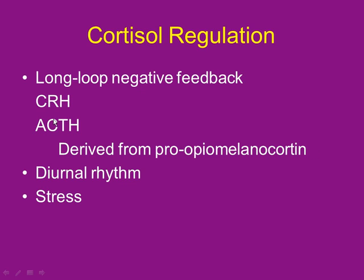The melanocyte-stimulating hormone activates pigment cells. So when you're stressed and making lots of ACTH, it starts darkening your skin pigment. The opioid part suppresses pain — evolutionarily good. So this pro-opiomelanocortin splits into ACTH for cortisol, a melanocyte-stimulating hormone, and an opiate to help you deal with pain in a bad situation. If you can't make cortisol, the hypothalamus cranks up ACTH, making more DHEA, darkening the skin, and releasing pain suppressants.